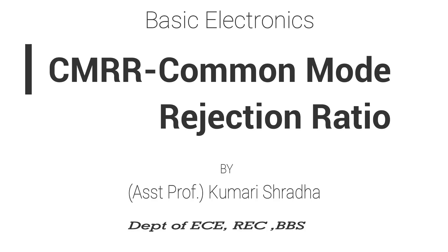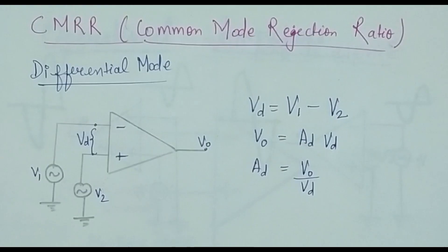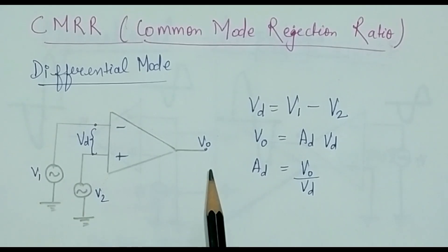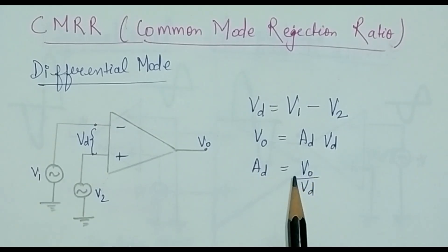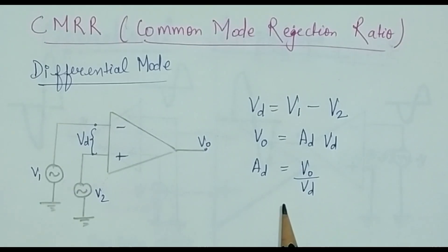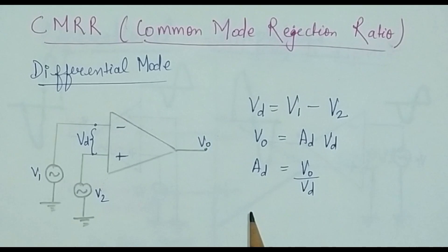Hello class, welcome to basic electronics class. Today we are going to discuss a very important parameter about the operational amplifier known as CMRR or common mode rejection ratio. In the previous class, I gave you a basic idea about the operational amplifier, we discussed its internal structure and the different input ways of an op-amp.